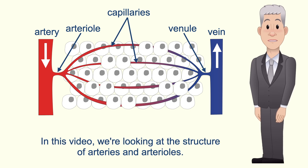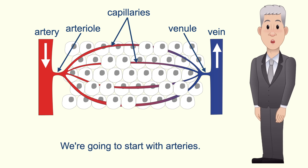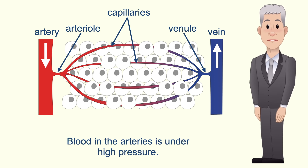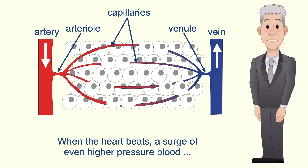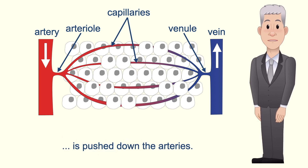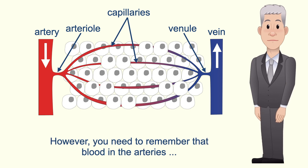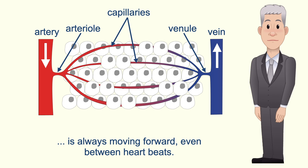In this video we're looking at the structure of arteries and arterioles, starting with arteries. Remember that arteries carry blood away from the heart to the organs. Blood in the arteries is under high pressure, and when the heart beats a surge of even higher pressure blood is pushed down the arteries — scientists call this the pulse. Blood in the arteries is always moving forward even between heartbeats.